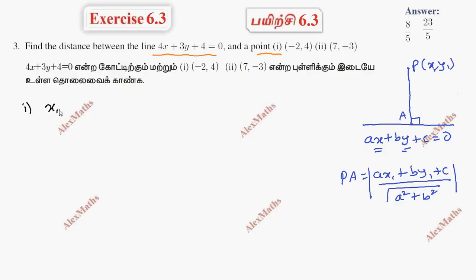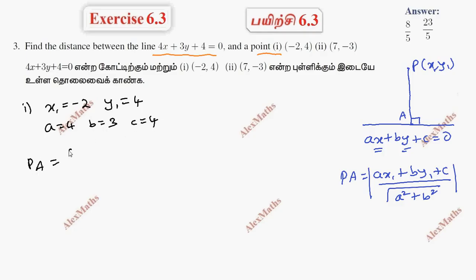First subdivision: point x₁ is equal to minus 2, y₁ is equal to 4. Values: a = 4, b = 3, c = 4. The equation of the line is given. Now we use the perpendicular distance formula to substitute.